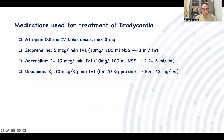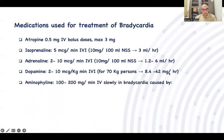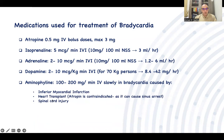Dopamine infusion dose is 2–10 mcg/kg/min; for a 70 kg person that is 8.4–42 mg/hour. Aminophylline is given for specific bradycardia at 100–200 mg IV slowly, particularly in patients with inferior myocardial infarction, post-heart transplant patients (where atropine is contraindicated as it may increase bradycardia or cause sinus arrest), and patients with spinal cord injury.